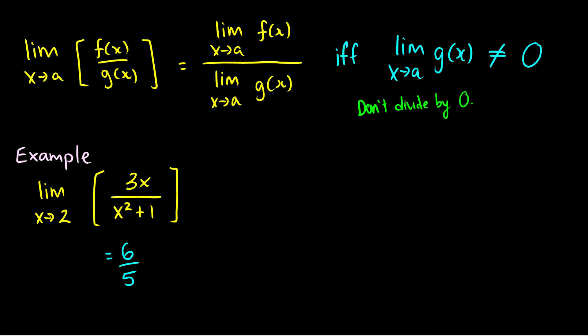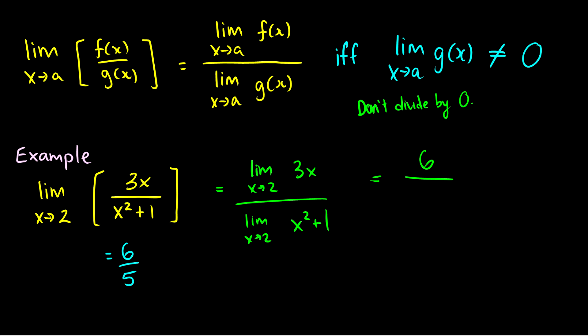But we can also take the limit individually: the limit as x goes to two of three x divided by the limit as x goes to two of x squared plus one. Plugging in values, three times two is just six, and plugging two in on the bottom gives two squared plus one, which equals five. So we get six over five — exactly the same. These might seem obvious, but there's a lot of mathematics behind it that we have to formally define in order to prove these things. We're just taking them for granted for now.